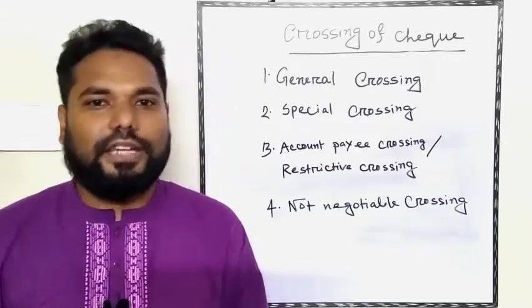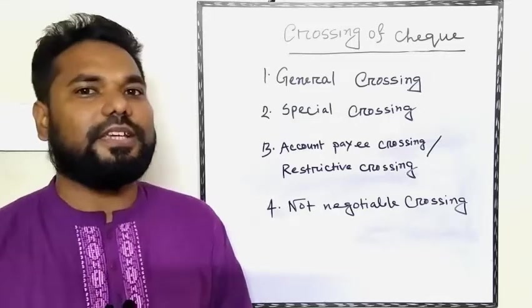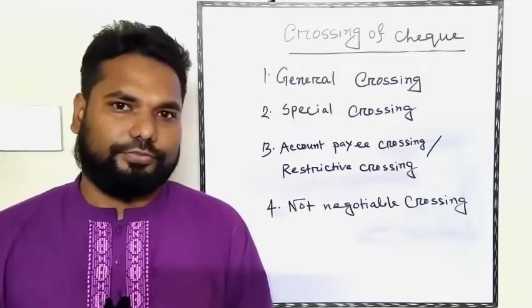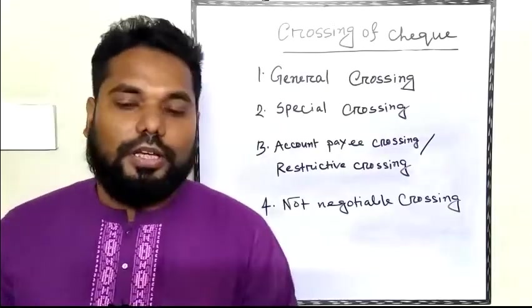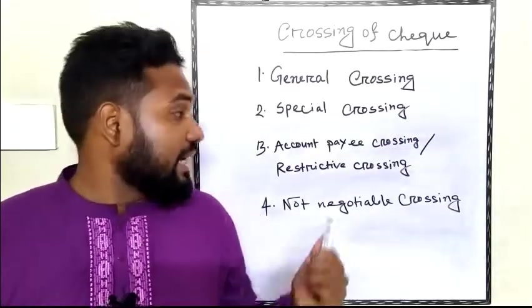To have payment in the bank, number three is account payee and restrictive crossing. Account payee proceeds as restrictive crossing.